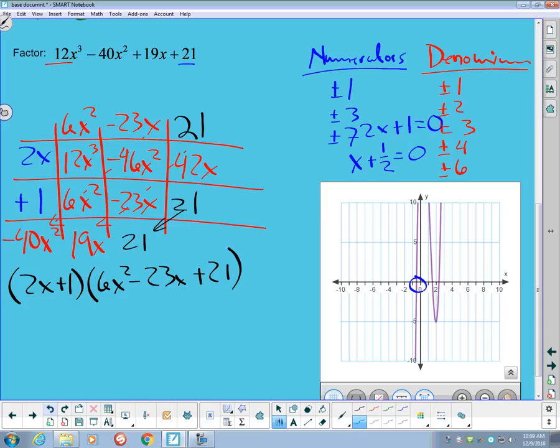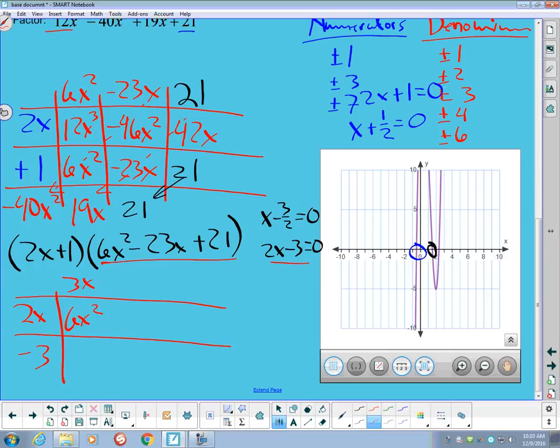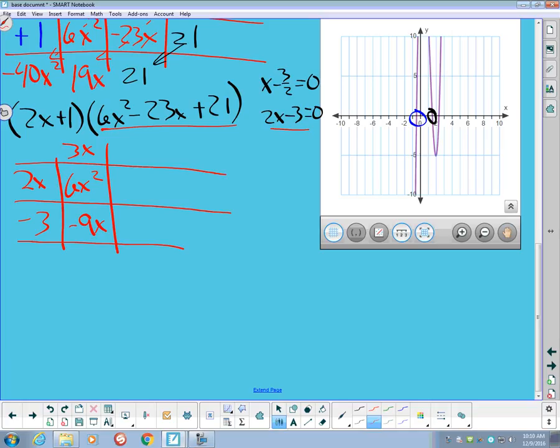And so far, I have a 2x plus 1 times a 6x² - 23x + 21. And I can go looking for another one that looks right here. This one looks like 3/2, which would be an x minus 3/2 is equal to 0. Or 2x minus 3 is equal to 0. So let's try to take a 2x minus 3 out of that. And make a 2x and a minus 3.